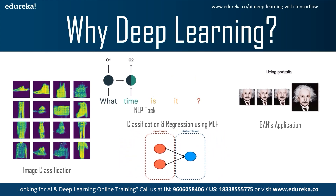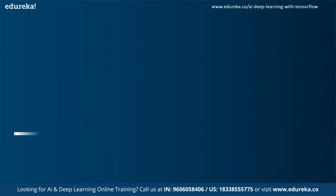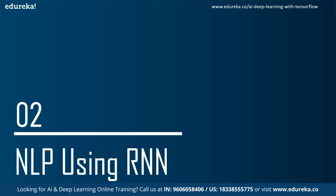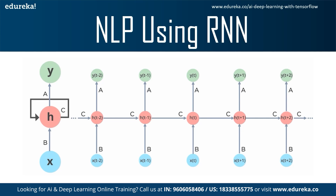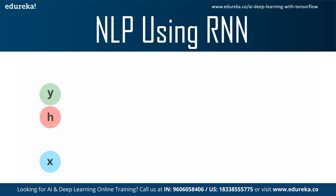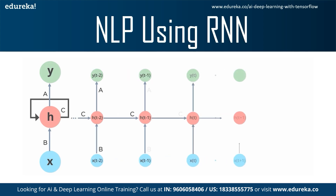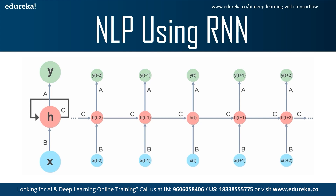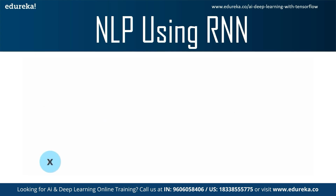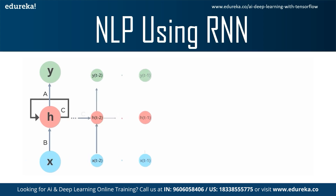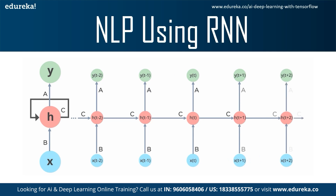Now let's understand how we can process natural language data using RNNs. RNN stands for Recurrent Neural Network and is used to deal with sequential data, which can be time series data or textual data of any format. RNNs have a concept of internal memory, which allows them to remember important things about the input received, making them very precise in predicting the next outcome. Examples of sequential data include time series, speech, text, financial data, audio, video, weather, and many more.